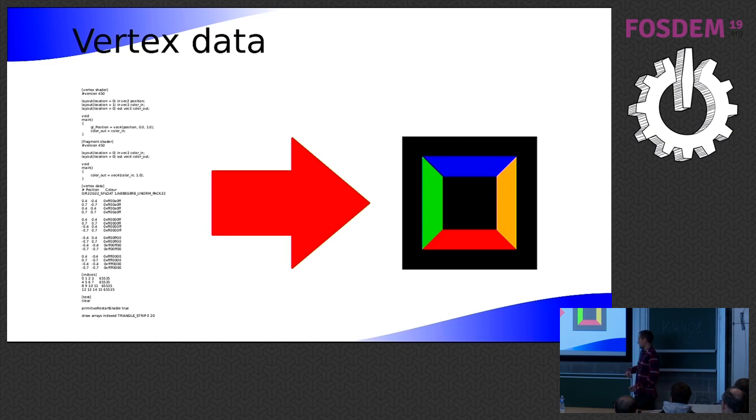So as I said, there's no actual WinSys, so there's no actual window when you run VK runner, but there's an option to output the image if you do want to look at it. So that's how I got that image.